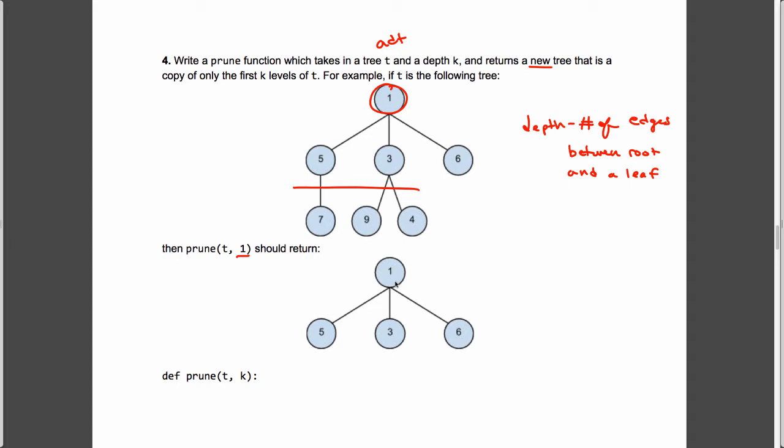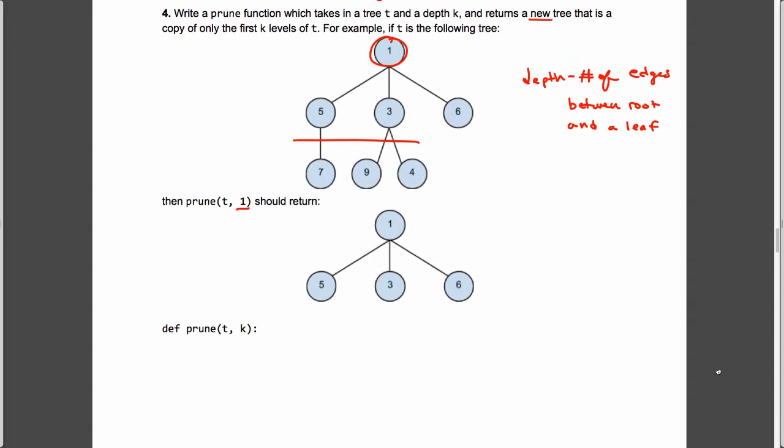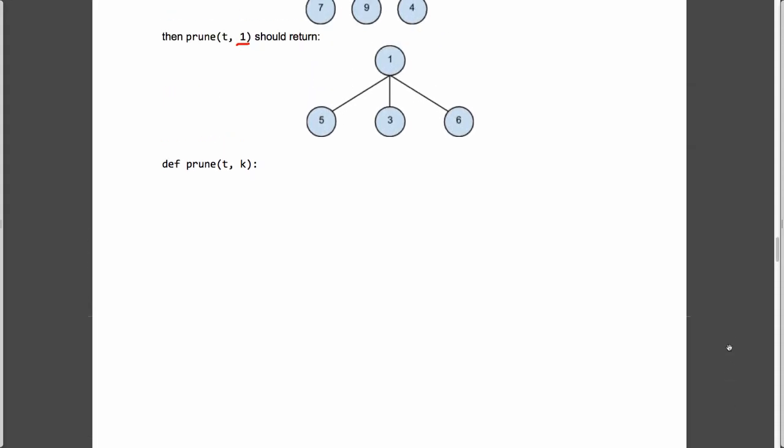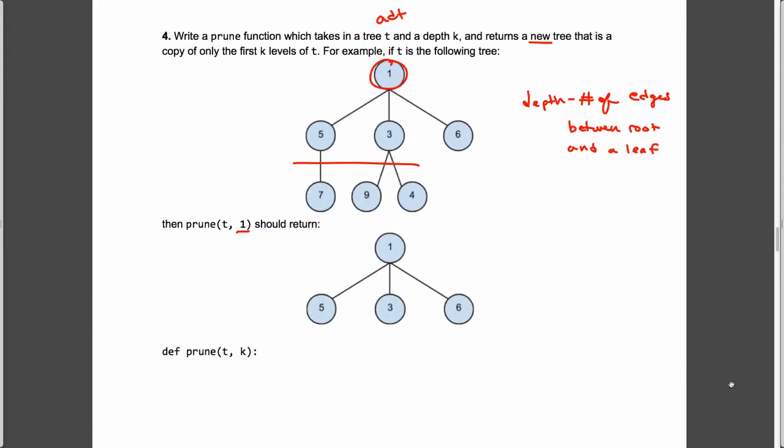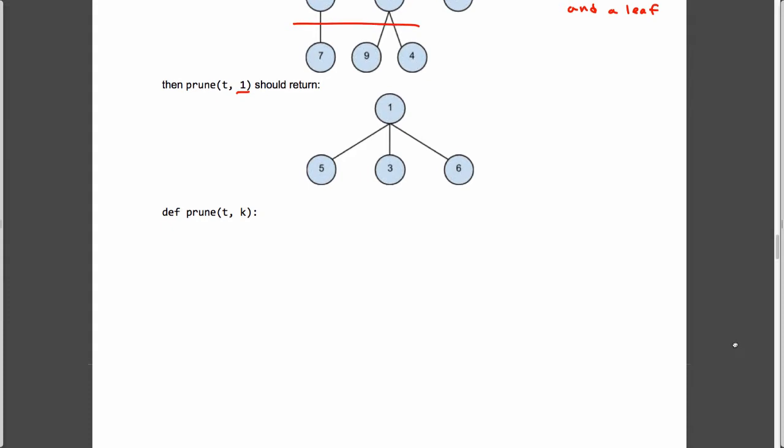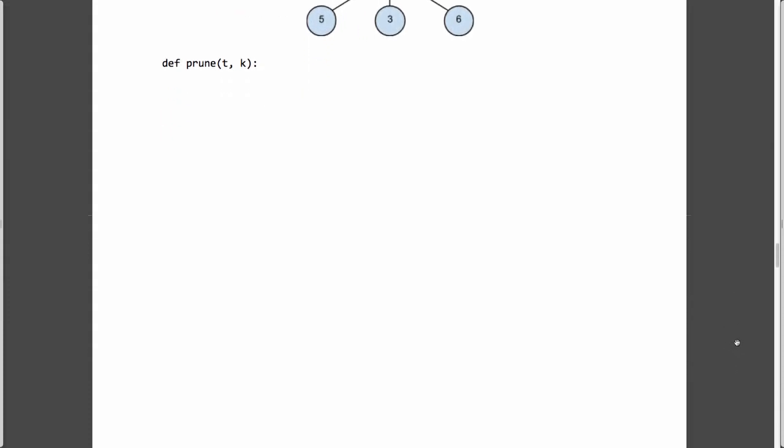Alright, so this is going to give us a lot of good practice with doing recursion on trees. So, we want to keep things that are only a copy of the first k levels of t. For example, if t is the following tree, we want to pass in. Alright, so when I'm thinking about trees, I like to think about my base cases first. So, what are our base cases?